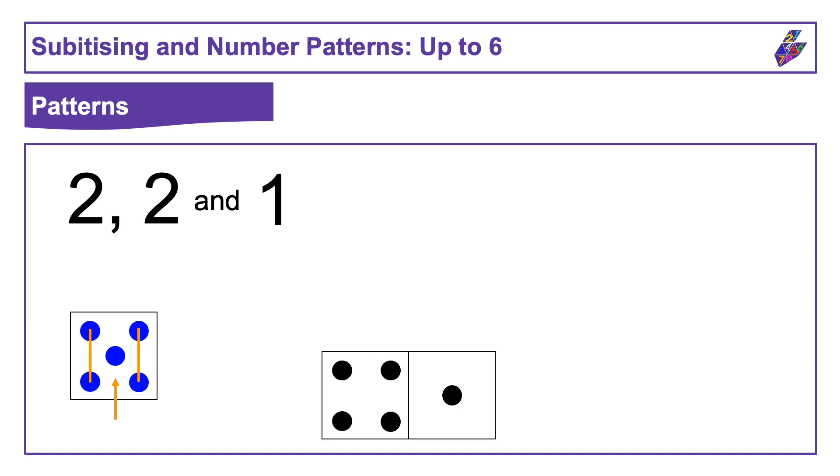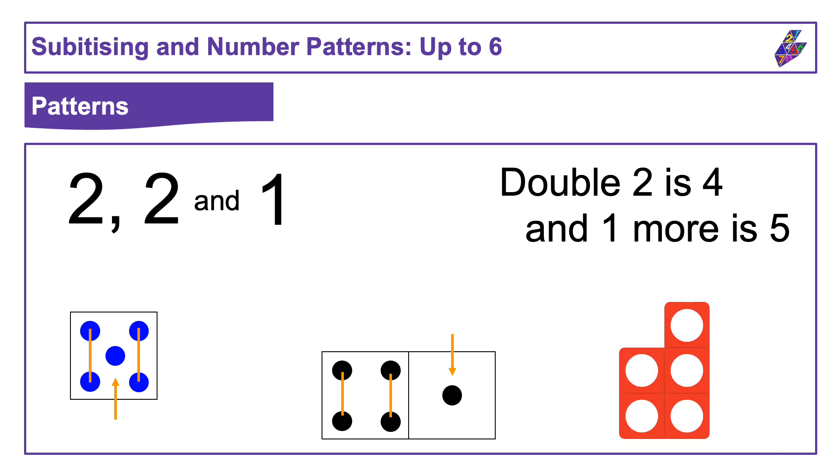Or on the domino pattern someone might have said, I see double two which is four and one more, which is five dots all together. They might have seen something similar on the red shape. Double two is four and one more is five circles all together. Again, you might have noticed no matter how you saw it, the total number for each was five.